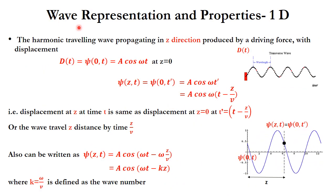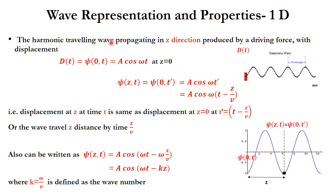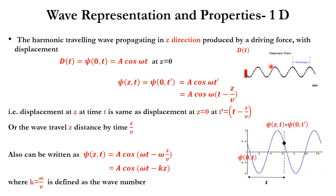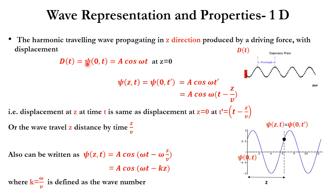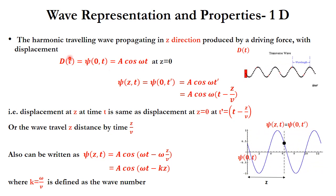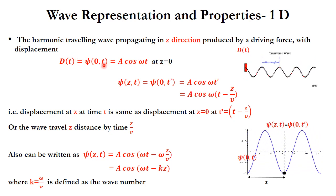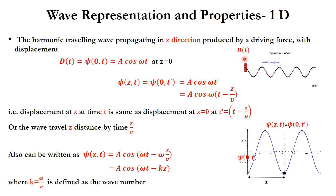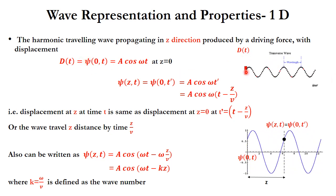Now we will see the wave representation and properties in the one-dimensional case. The harmonic traveling wave propagating in the z-direction is produced by a driving force with displacement d(t). This d(t) can be written as: psi(0, t) = A cos(ωt), equating the driving displacement to the wave function at z = 0. The wave generated here propagates through the medium or vacuum.